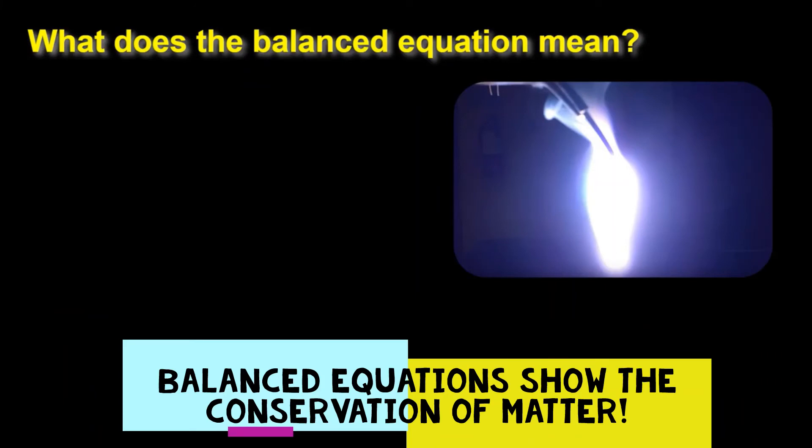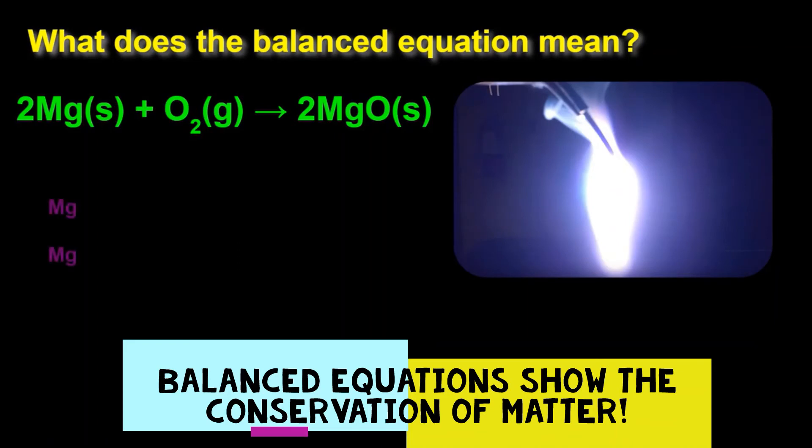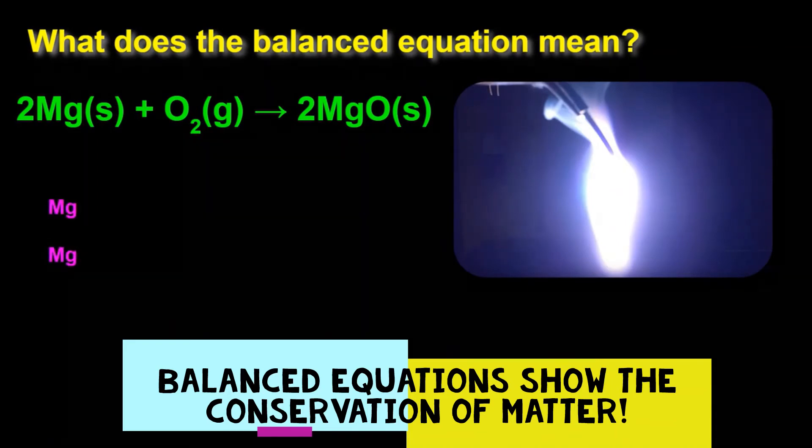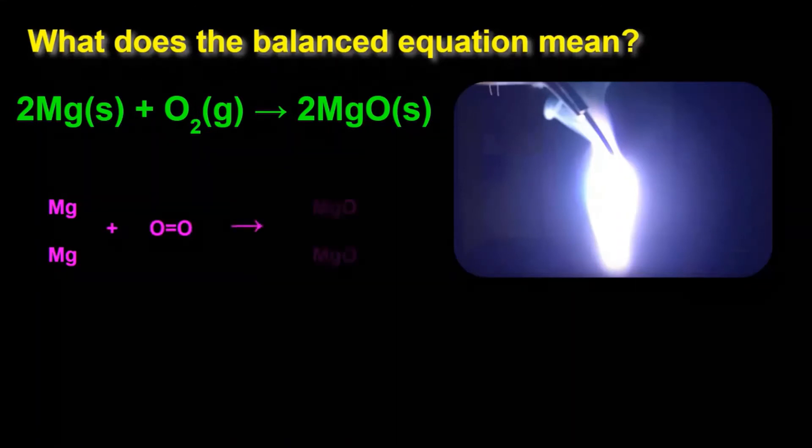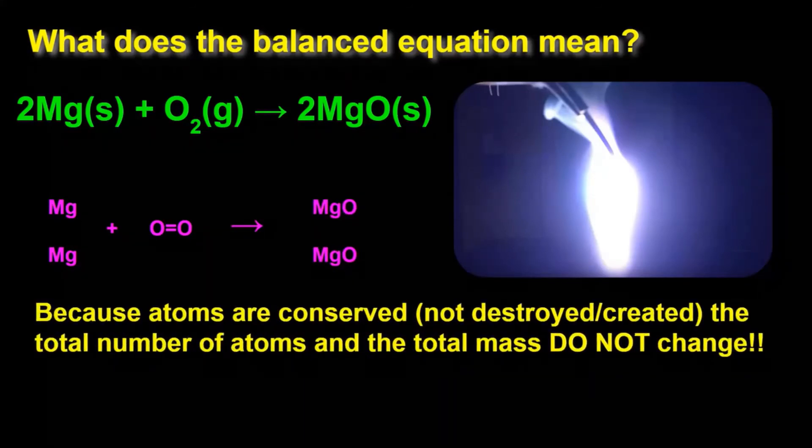The balanced equation for the reaction seen in this video is 2Mg plus O2 yields 2MgO. Balanced equations show the conservation of matter. For this reaction, the balanced equation means that for every two atoms of magnesium, they'll react with one molecule of diatomic oxygen to produce two formula units of magnesium oxide. Conservation of matter means that atoms are not created and atoms are not destroyed in reaction processes. This means that the total mass will stay the same.